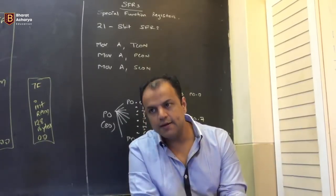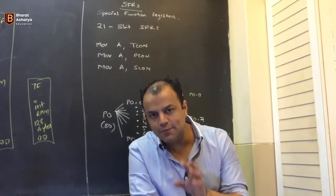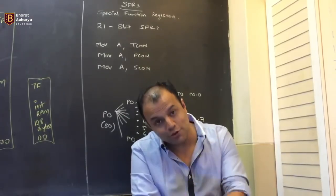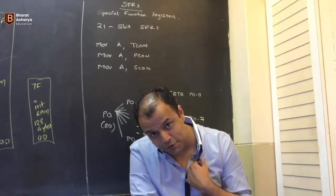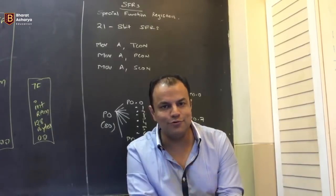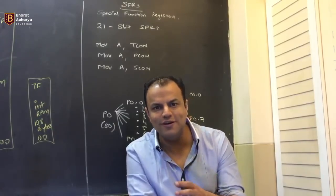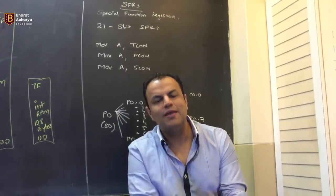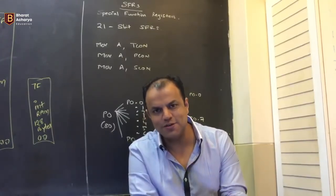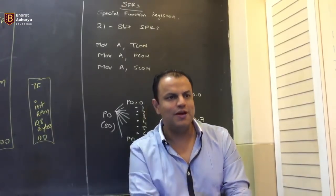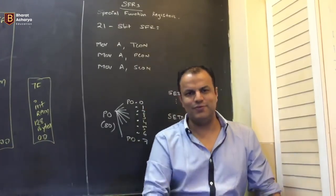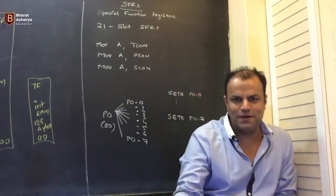Other than the general purpose registers, there are 21 registers also available to the programmer. But they are not used for storing ordinary values — they have some special use. Here is the whole list: A, B, PSW.